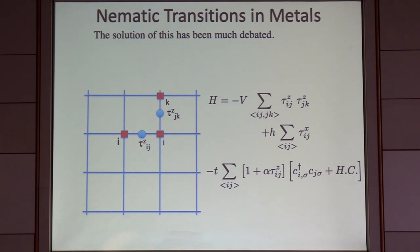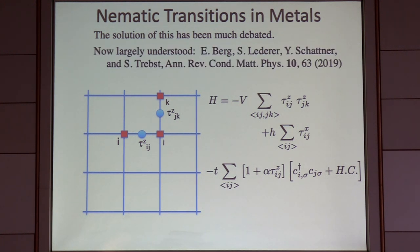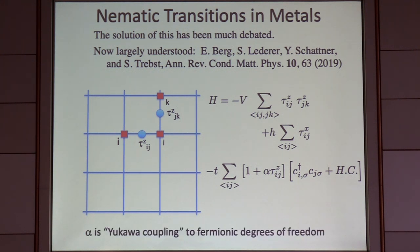This is an example of a metallic critical system — a class of problems that has been much debated and studied in the theory community for the last 15–20 years. I would claim that by now the solution of this problem is largely understood. I very much recommend looking at the lovely review article in Annual Reviews of Condensed Matter Physics by Erisberg, Sam Lederer, Yoni Shatner, and Ziemann Trepst. The coupling alpha is analogous in high-energy physics to a Yukawa coupling.